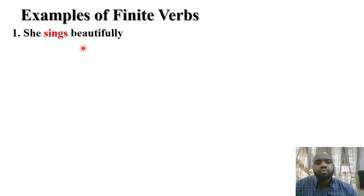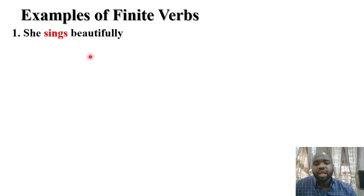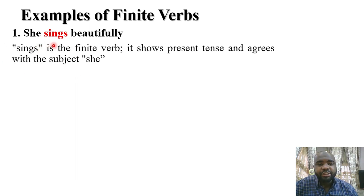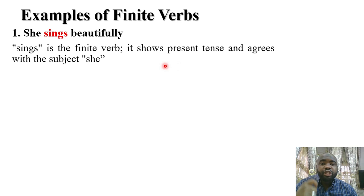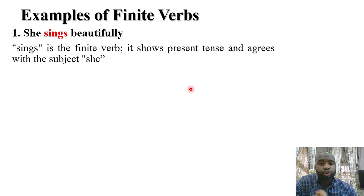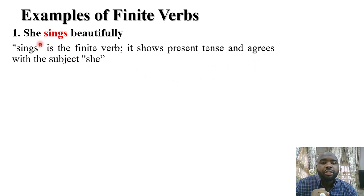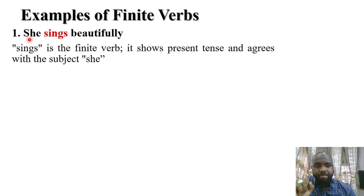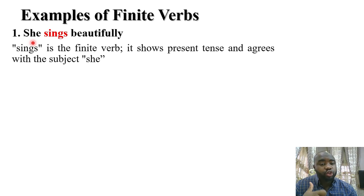Example one: 'She sings beautifully.' The verb 'sings' is a finite verb. It shows present tense — that she is singing, a habitual action. It also agrees with the subject 'she,' which is singular in number. Because 'she' is singular, we add an 's' to the verb, so it agrees with the subject.